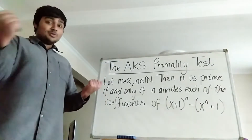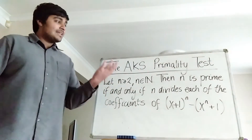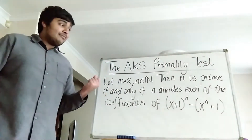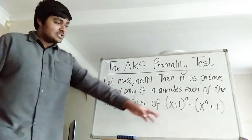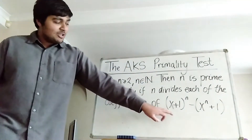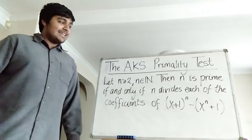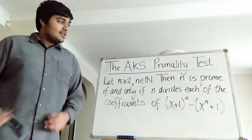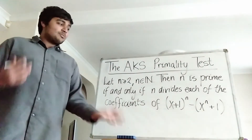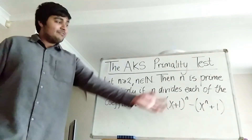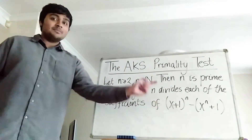Suppose you give me a natural number n which is bigger than or equal to 2, then n is a prime if and only if n divides each of the coefficients of this polynomial here. So this polynomial is (x+1) all raised to the n, minus x to the n, minus 1. And we claim that n is prime if and only if it divides each of the terms in this polynomial.